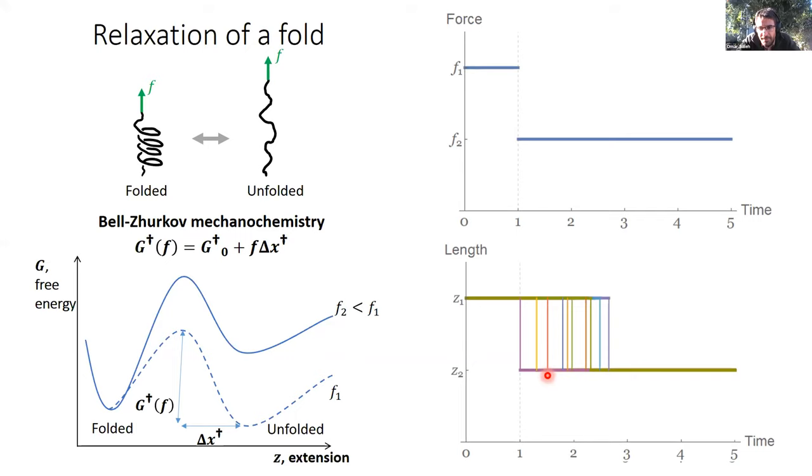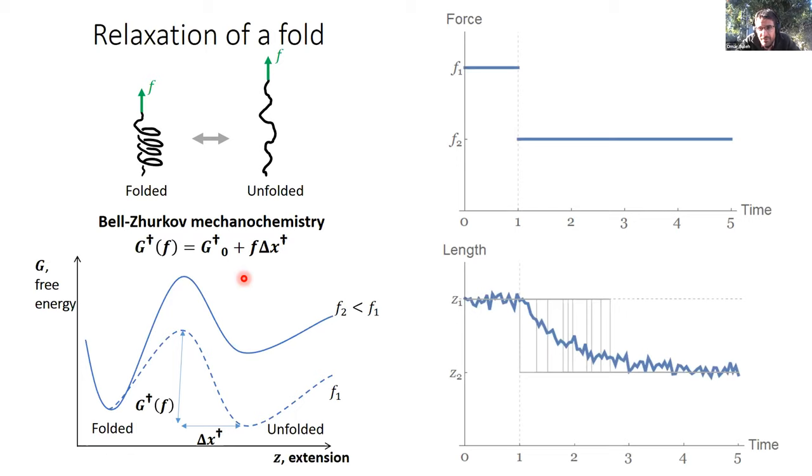Of course, if you repeat this experiment many, many times, you get different stochastic times because of the random nature of the barrier crossing process. And if you were to average over many of these, you would find in fact an exponential relaxation from the initial to the final state. And so this is a very common feature in many systems that if there's a single kind of process determining the relaxation, you would expect it to relax exponentially.